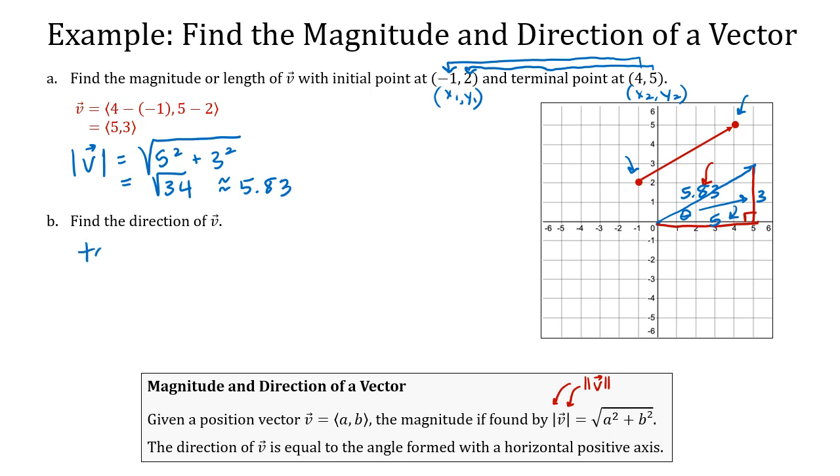So, I'm going to say that the tangent of angle theta is equal to the side opposite it, which is 3, over the side adjacent to it, which is 5. And so, theta is going to equal tangent inverse of 3 fifths. I'm going to use a calculator to say that theta is approximately 30.96 degrees, which, from the horizontal positive axis, is believable.